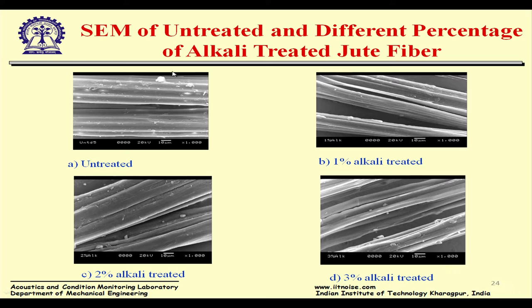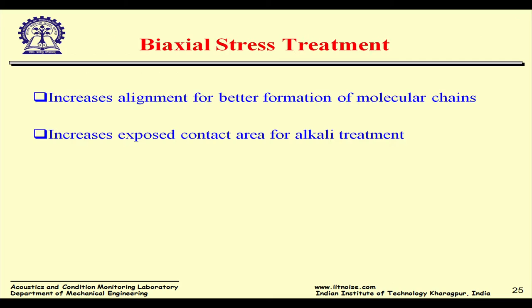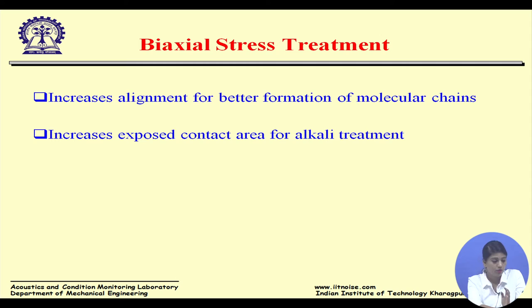SEM images show the untreated fiber versus treated fibers. With 1% alkali treatment, some pores open up. With 2% alkali treatment, more space appears; with 3%, even more space between fibers. This treatment removes impurities to achieve better bonding. We also perform biaxial stress treatment to increase fiber alignment for better molecular chain formation and increased exposed contact area from the alkali treatment.